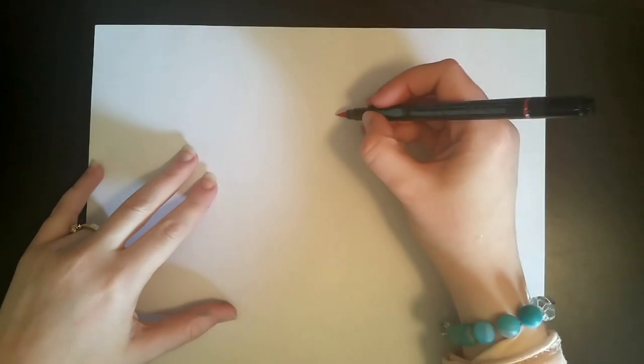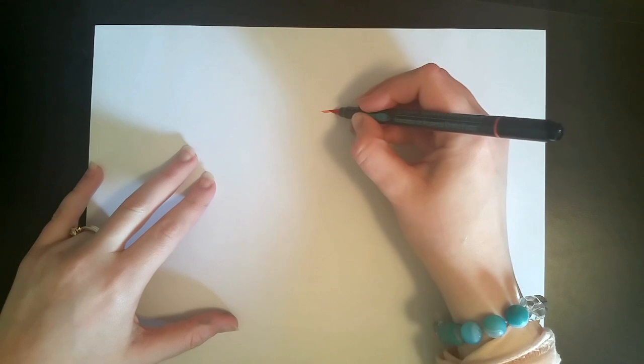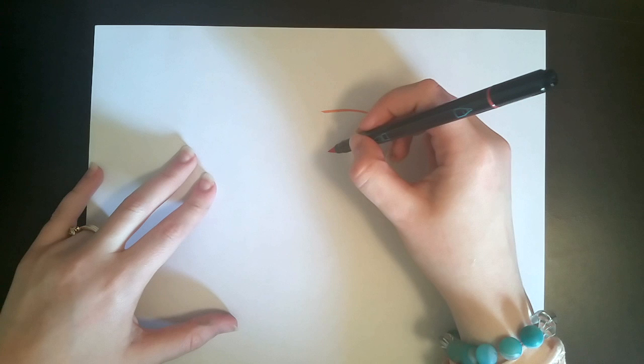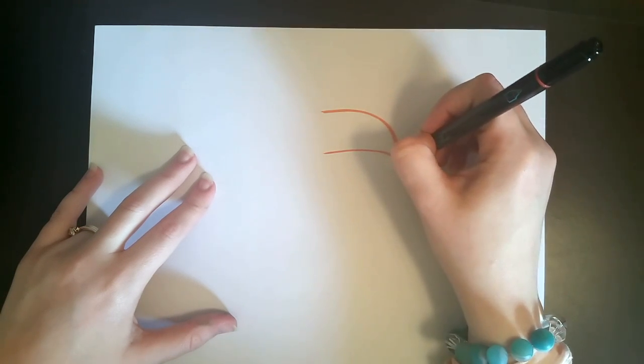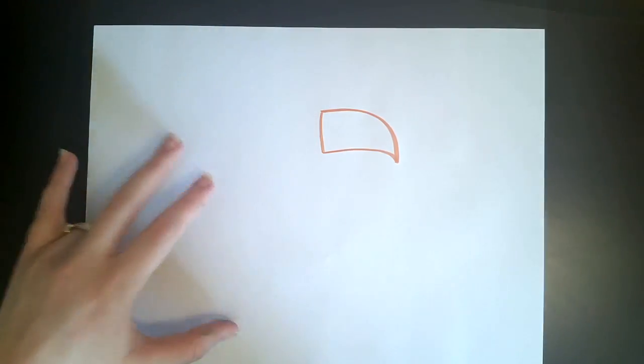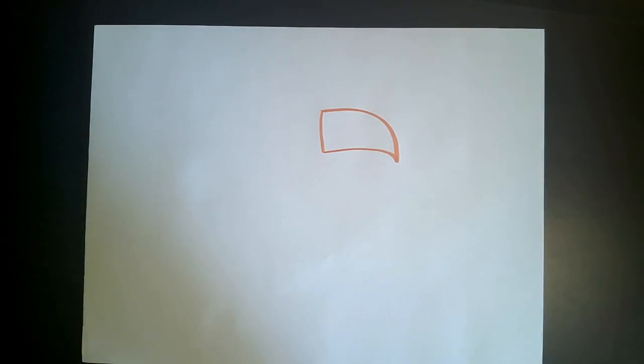Alright, get ready, grab your orange marker. We're going to start with the beak. So you draw a long curve and then underneath it another long curve that goes into a point and then connect the two like that toucan beak. Who knew it was that easy?